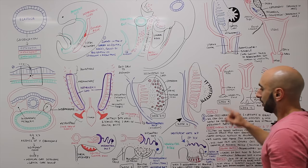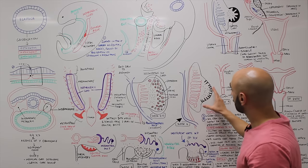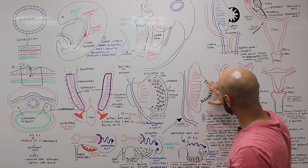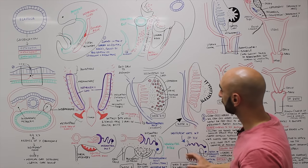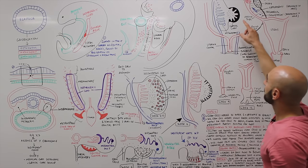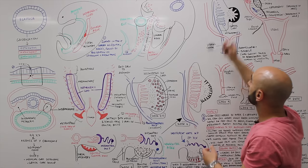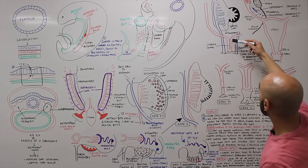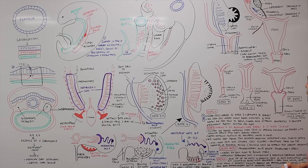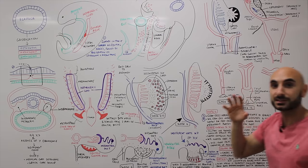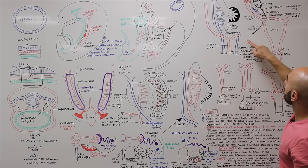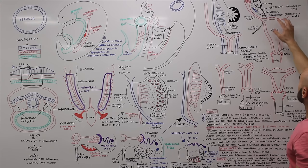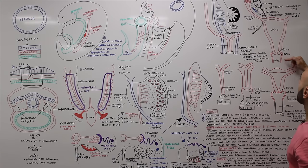Going back, at week six we have the indifferent gonad, which could either be a testis or an ovary. Over here we have the ovary developed and we begin to see the fimbria, the uterine tube, and the uterus being developed. At birth, the ovary is suspended with the suspensory ligament and the round ligament of the uterus, with the uterus, the cervix, the vagina, and the fornices surrounding the cervix.